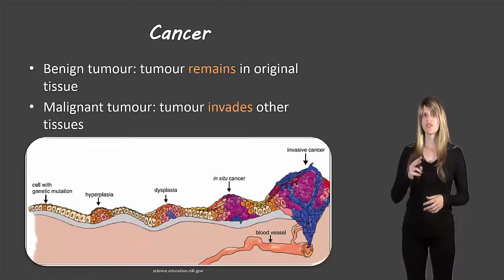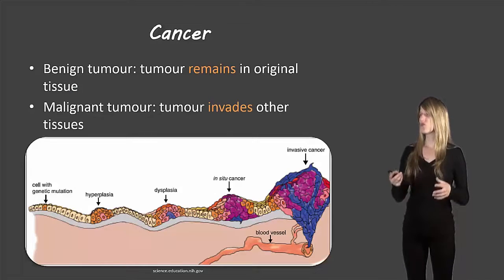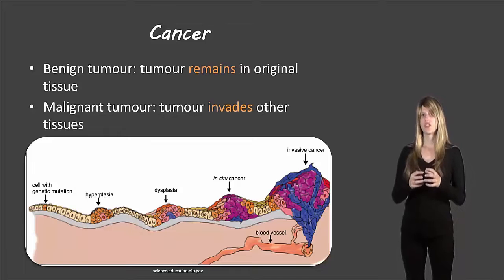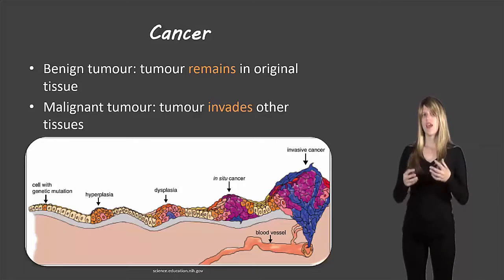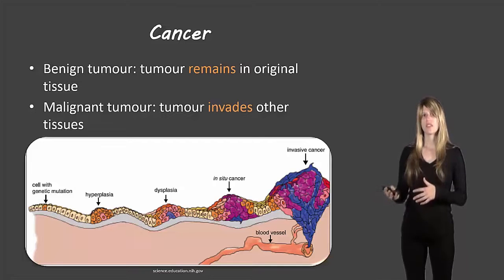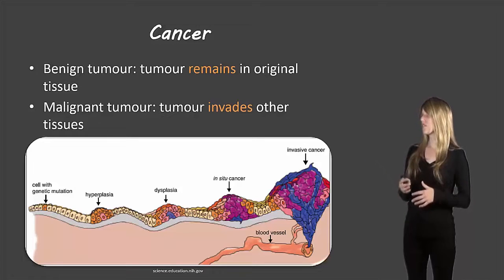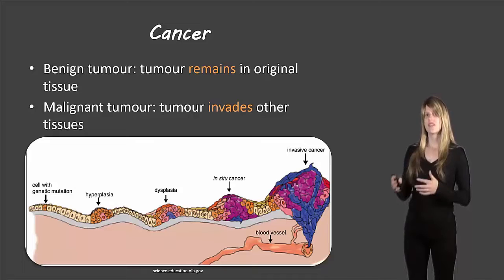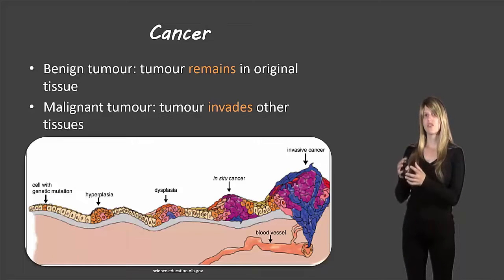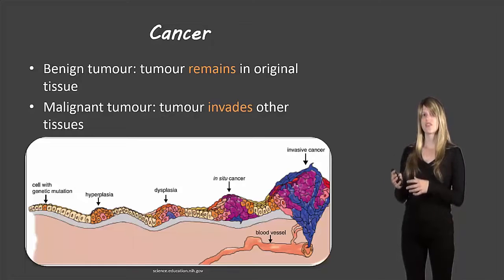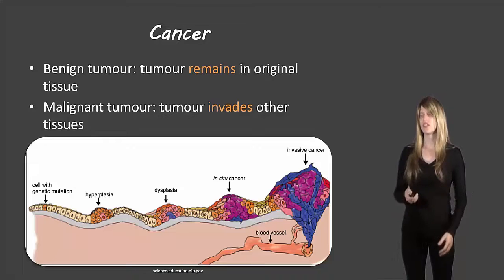There are two types of tumors. A benign tumor remains in the original tissue where the tumor formed. A malignant tumor is able to invade other tissues. Looking at the picture, they use the term 'in-situ cancer' to mean a benign tumor staying in the same place, and 'invasive cancer' to mean a tumor that's malignant and has been able to move to other tissues.